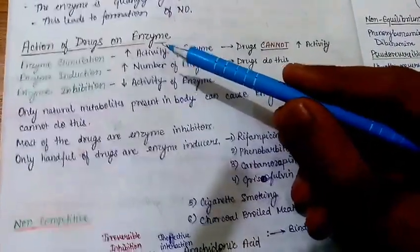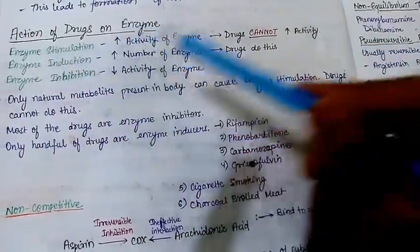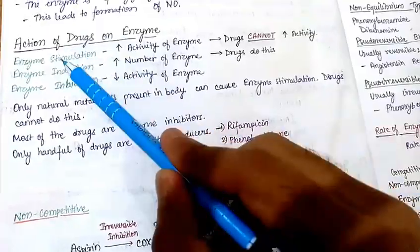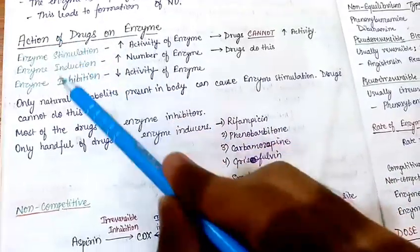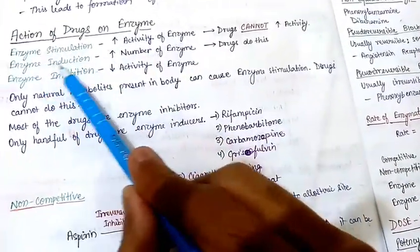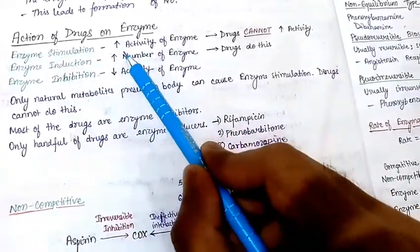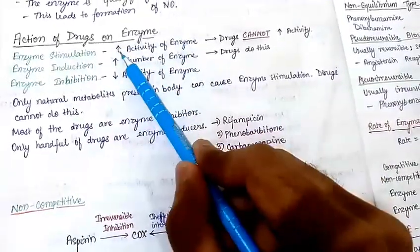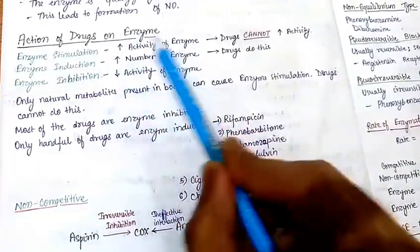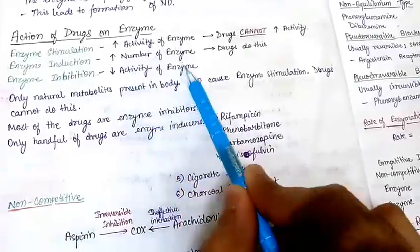This is our third video of pharmacodynamics in which we are going to discuss the action of drugs on enzymes. Before going to this, we will first look at three words: enzyme stimulation, enzyme induction, and enzyme inhibition. Enzyme stimulation is just increasing the activity of an enzyme. Enzyme induction is increasing the number of enzymes, and enzyme inhibition means decreasing the activity of an enzyme.